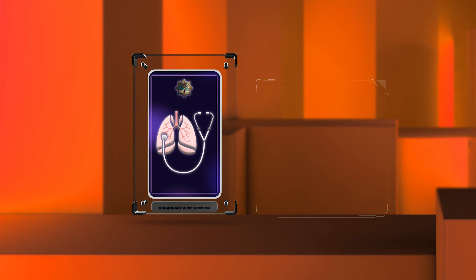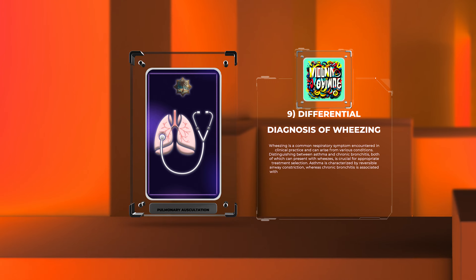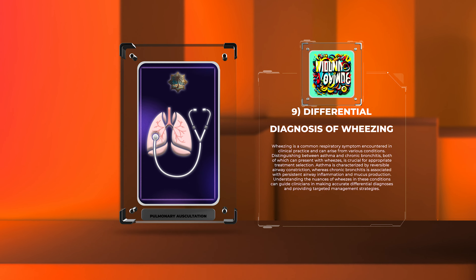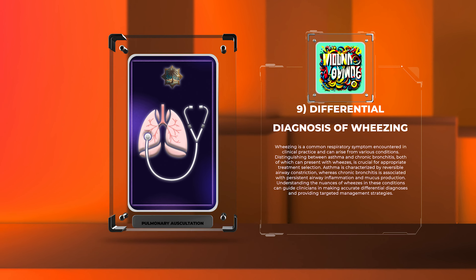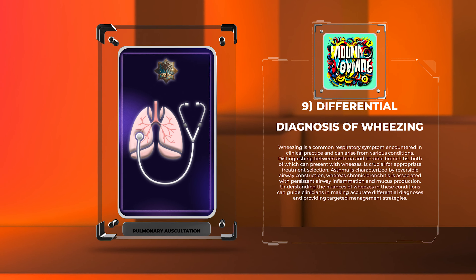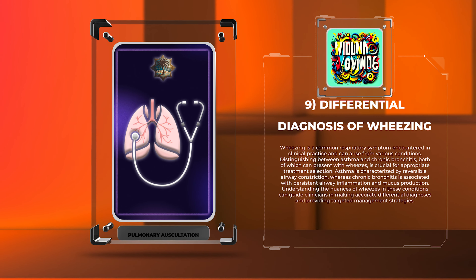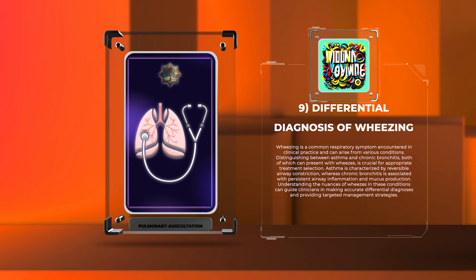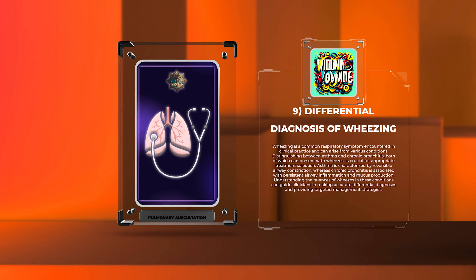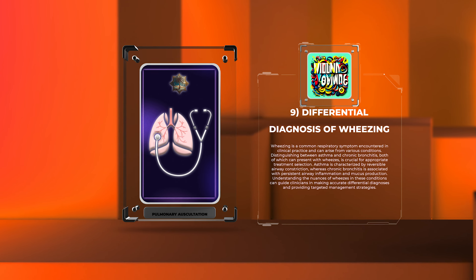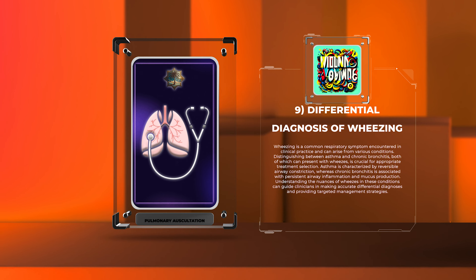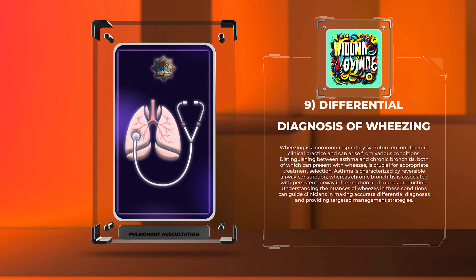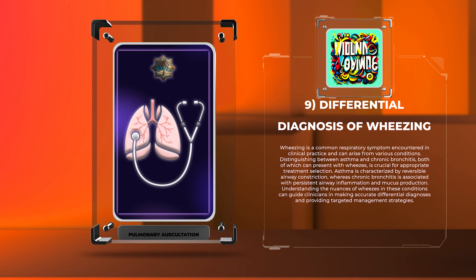Wheezing is a common respiratory symptom encountered in clinical practice and can arise from various conditions. Distinguishing between asthma and chronic bronchitis, both of which can present with wheezes, is crucial for appropriate treatment selection. Asthma is characterized by reversible airway constriction, whereas chronic bronchitis is associated with persistent airway inflammation and mucus production. Understanding the nuances of wheezes in these conditions can guide clinicians in making accurate differential diagnoses and providing targeted management strategies.